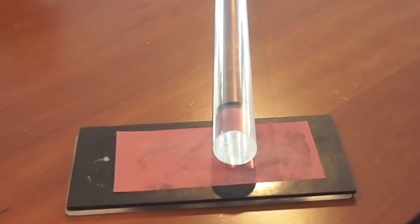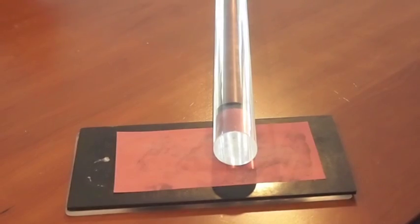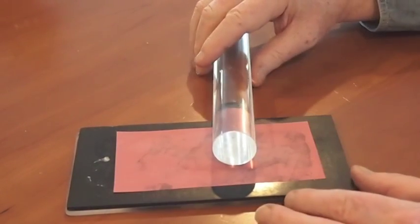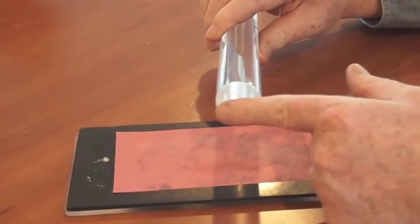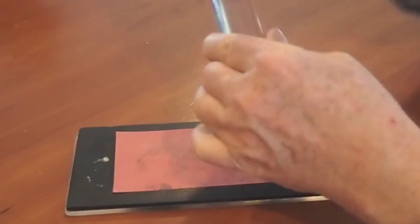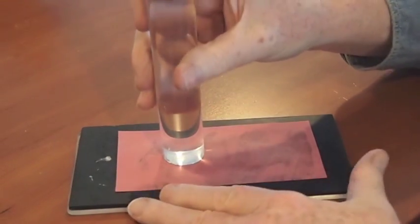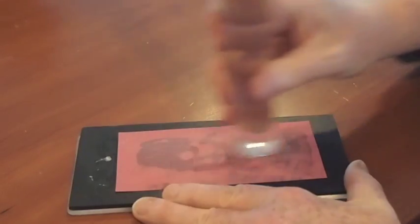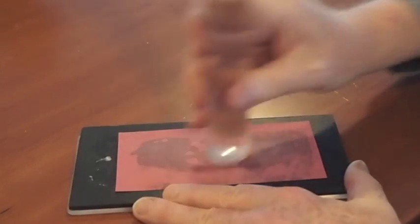To demonstrate how fiber works, we're going to use this 30 millimeter plastic rod. To effectively get light in and out of it, we're going to polish the end, just like we polish an optical connector, using the same film that we use for polishing connectors.